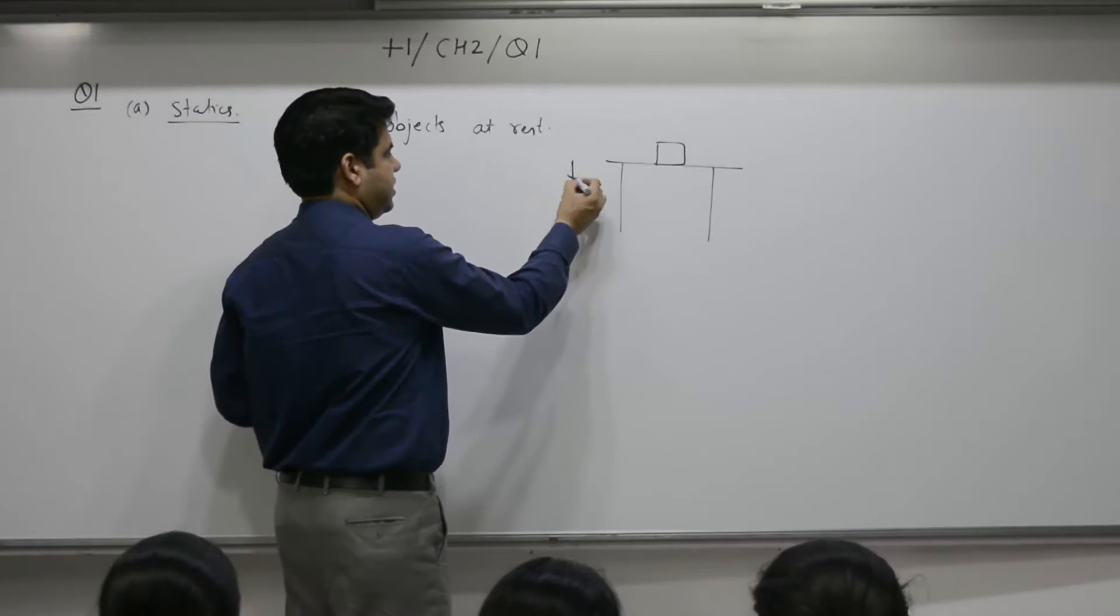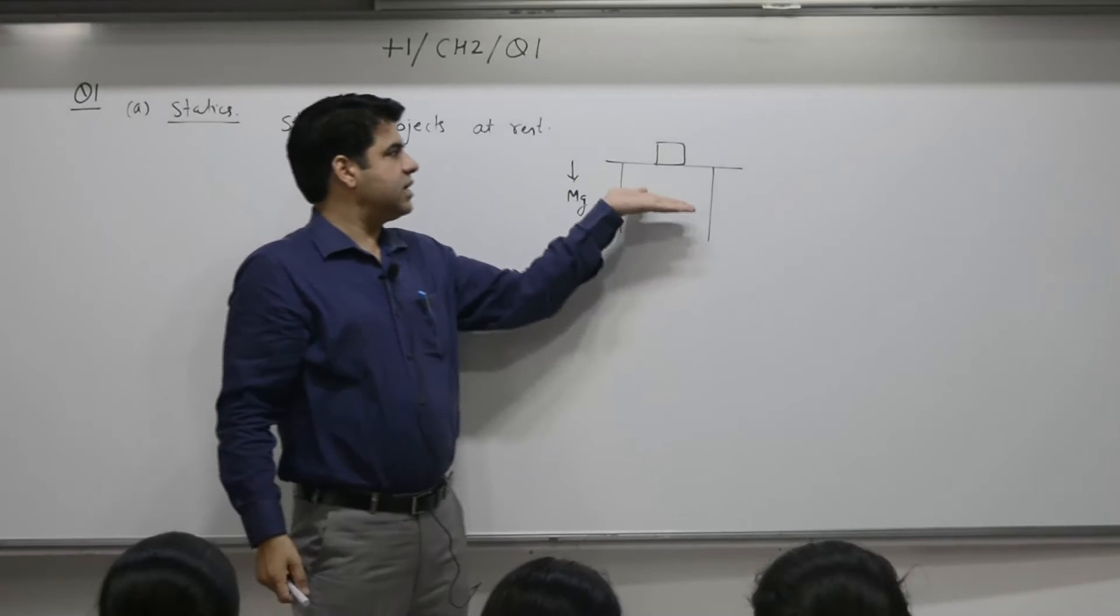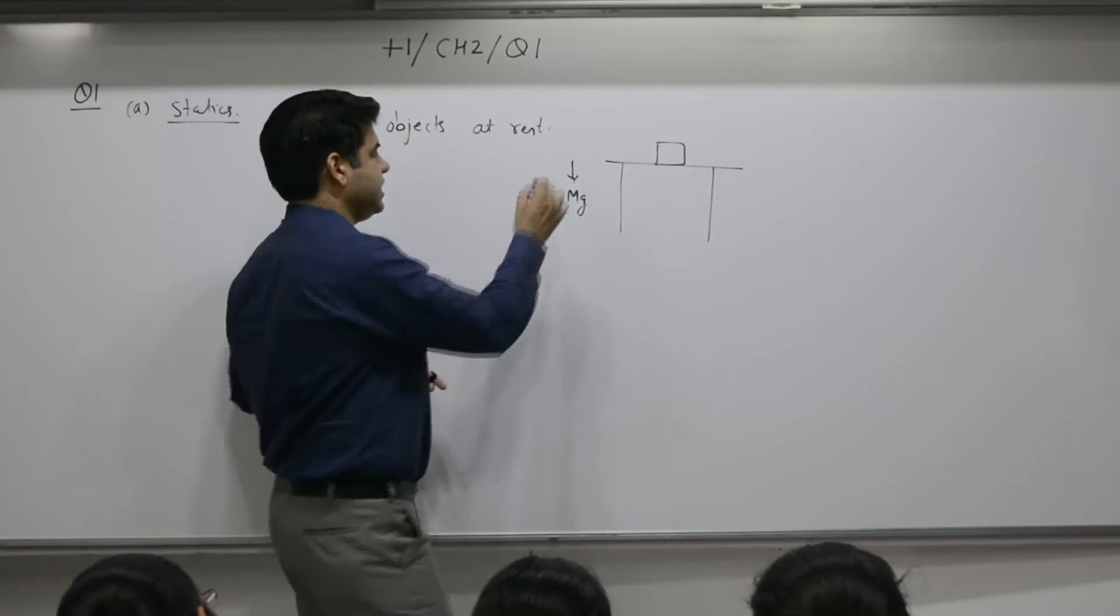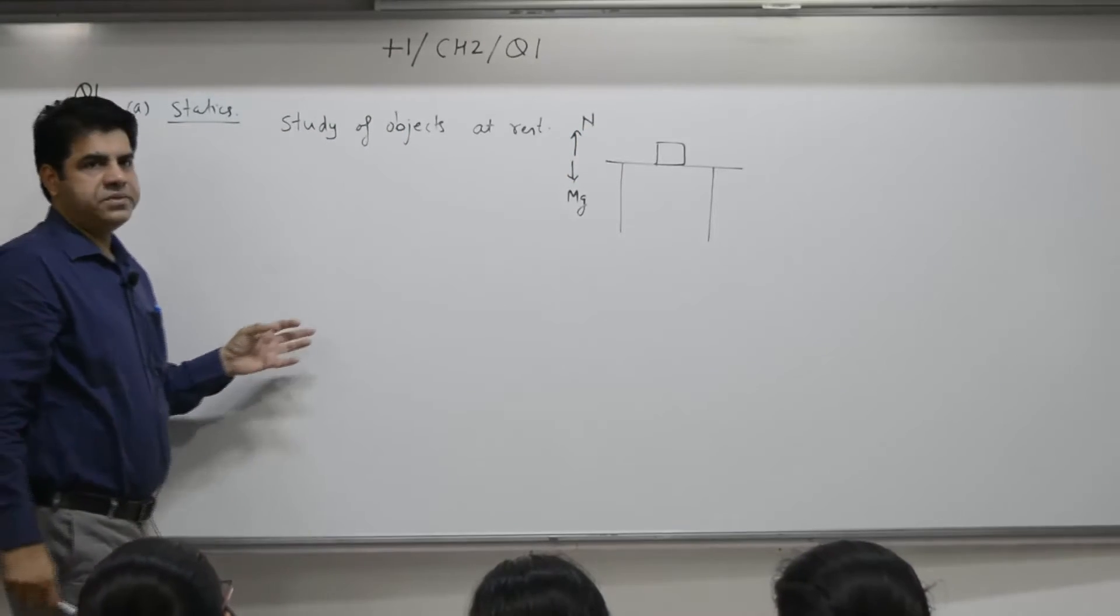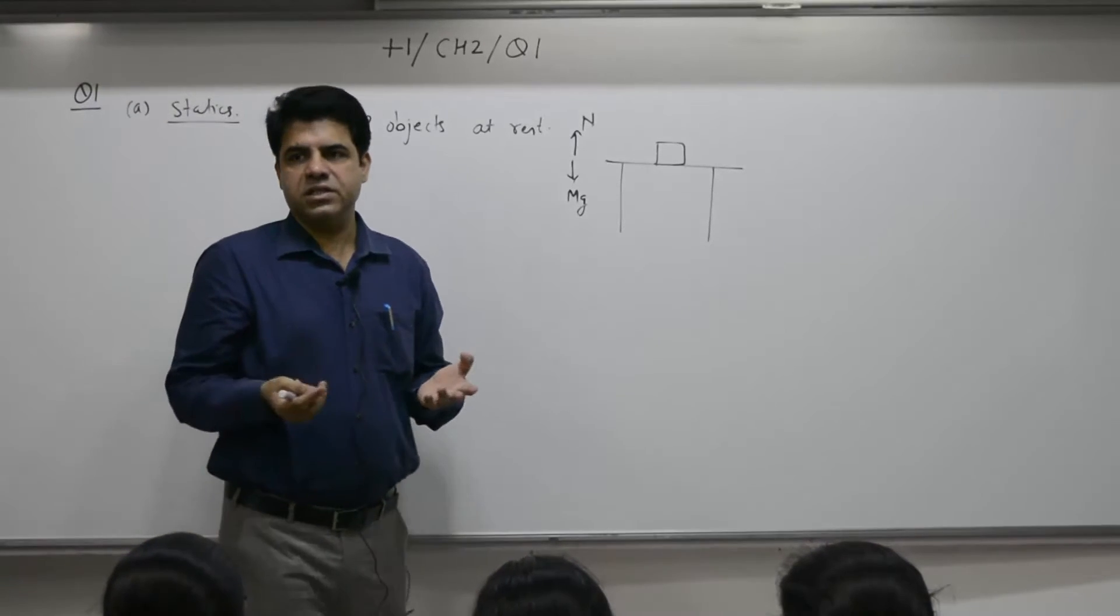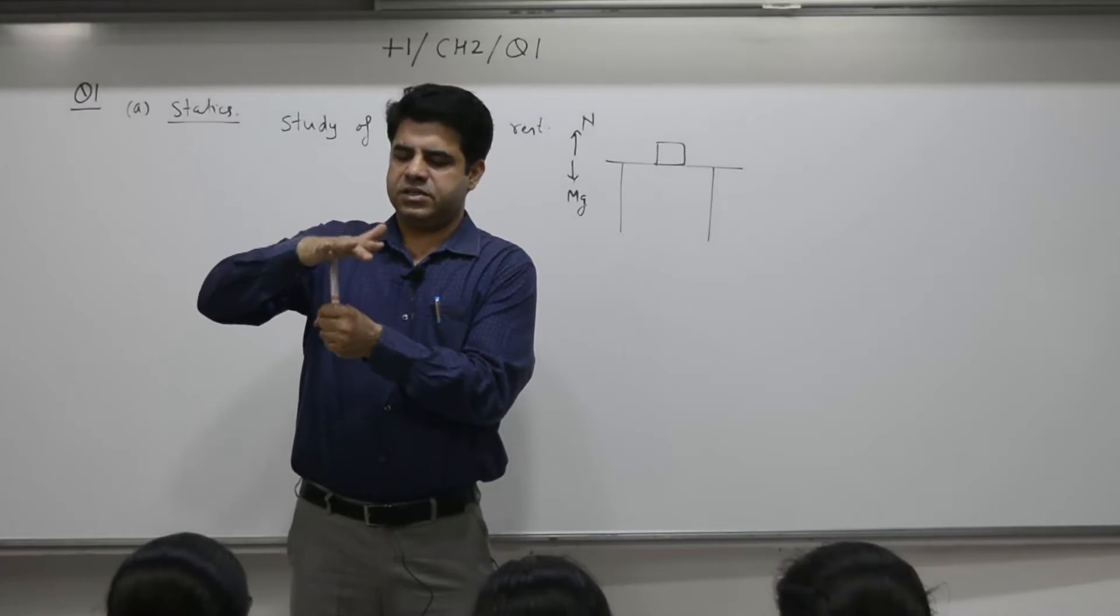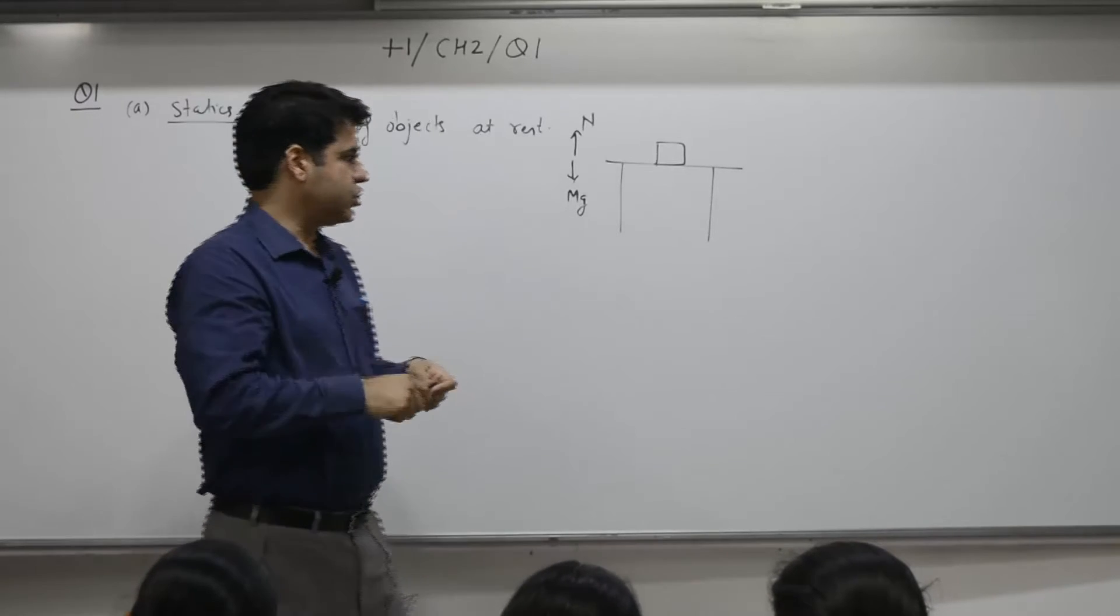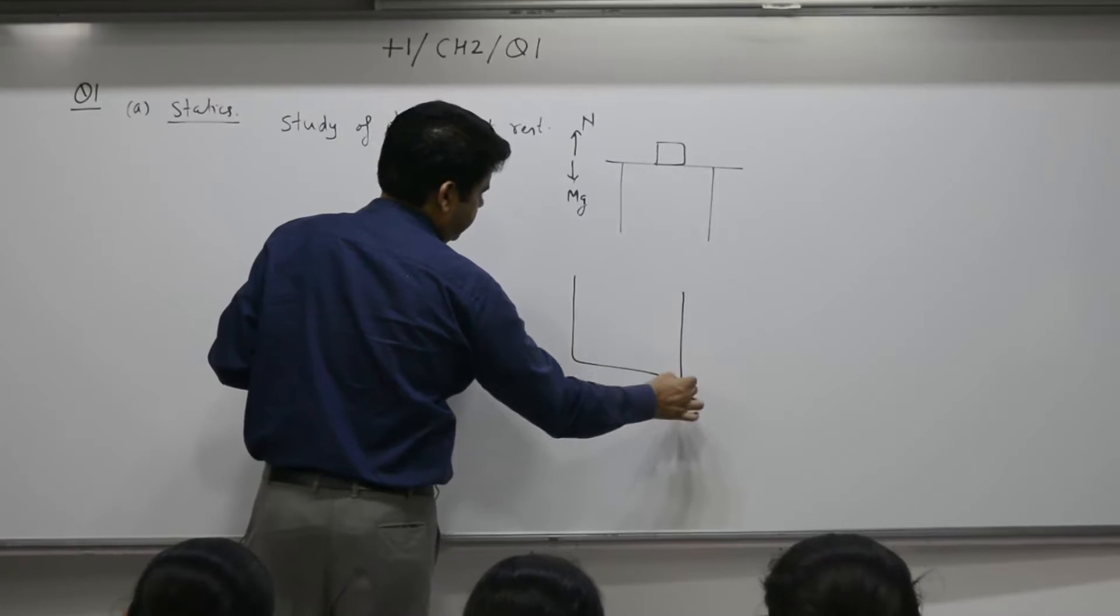So weight acts downward, the table gives a reaction to the book in which direction? Upward direction. So this is analysis of objects at rest. Building - building is also at rest. So various walls, pillars, they are subjected to certain force, certain weight. That is also, and we will have in chapter number 7.